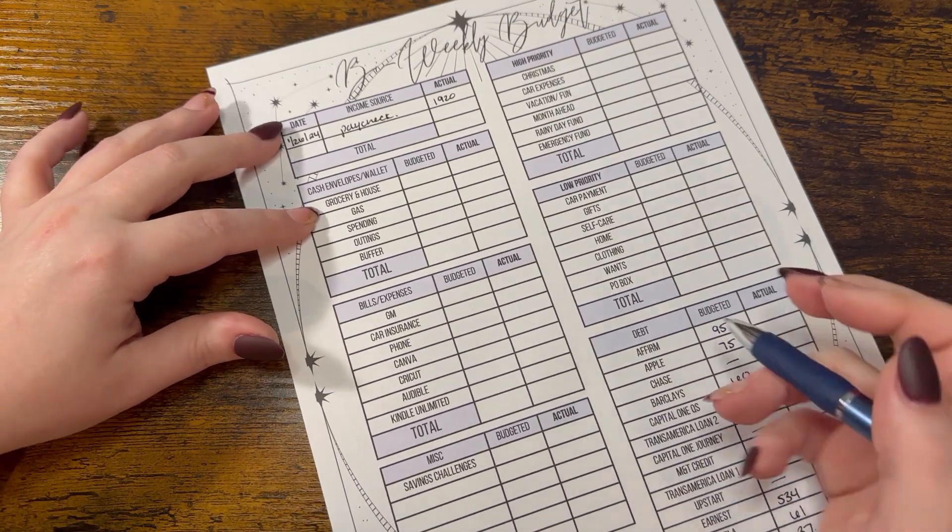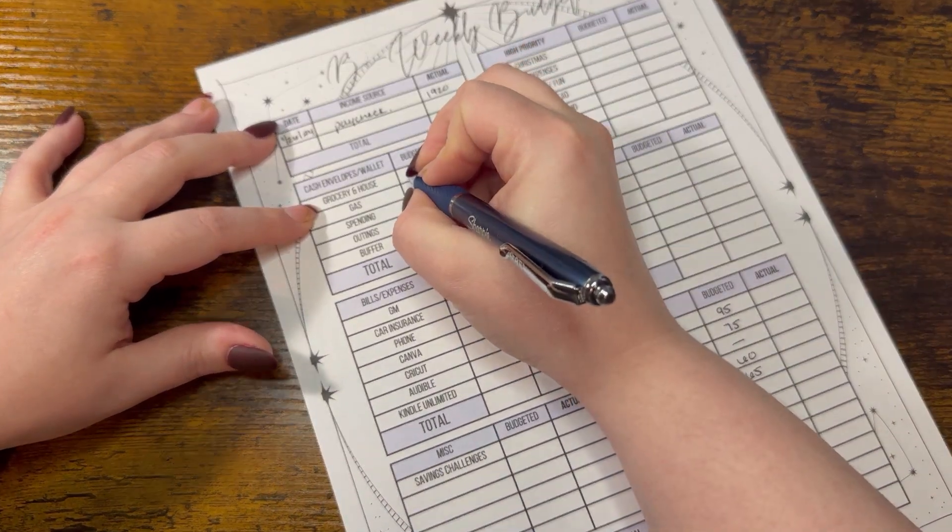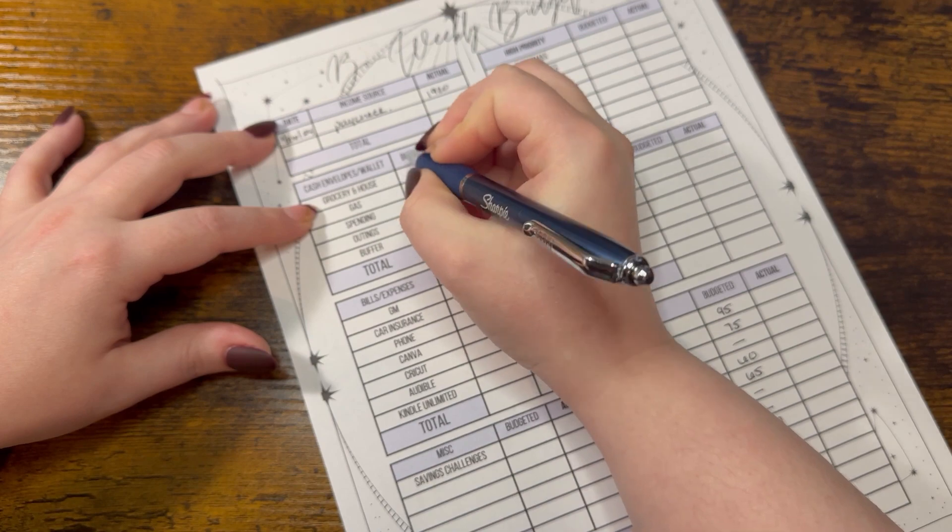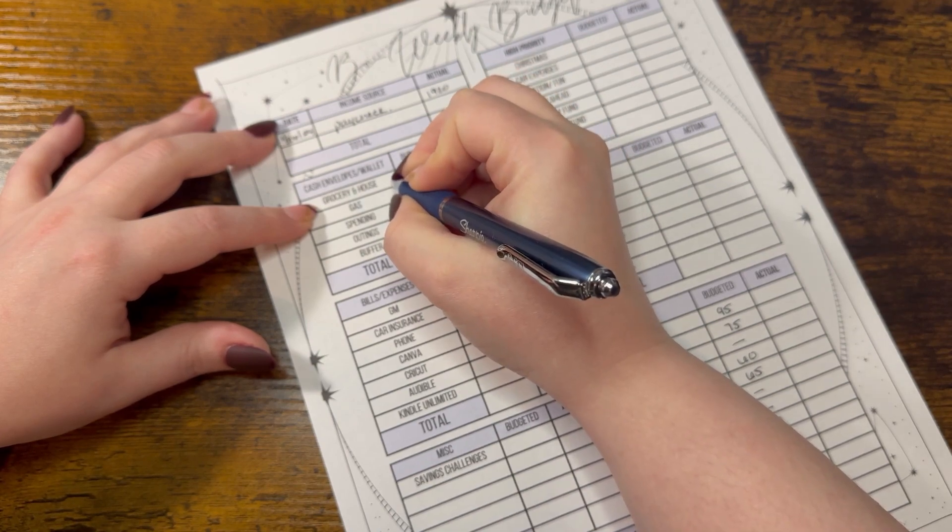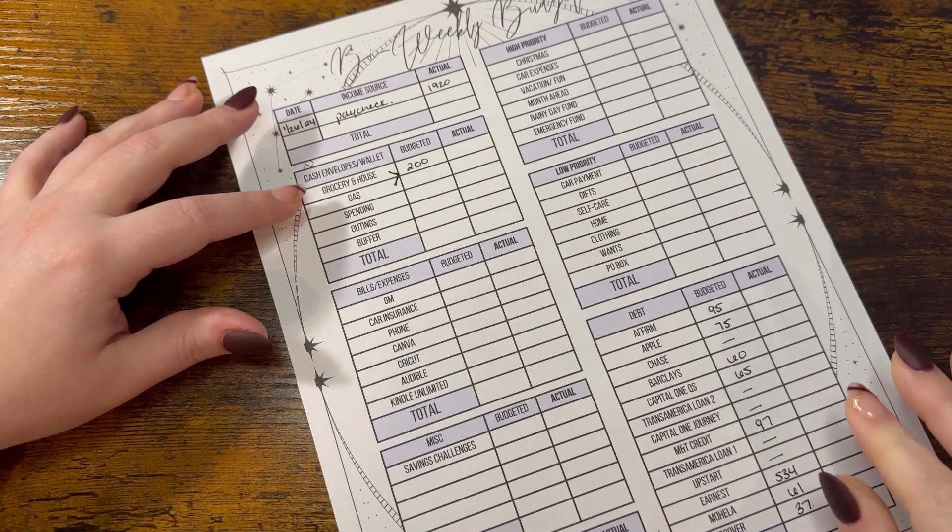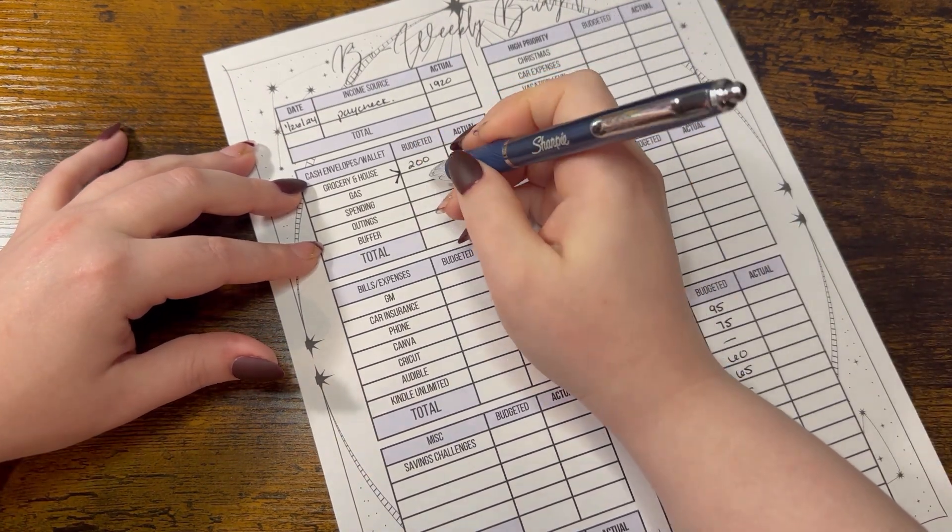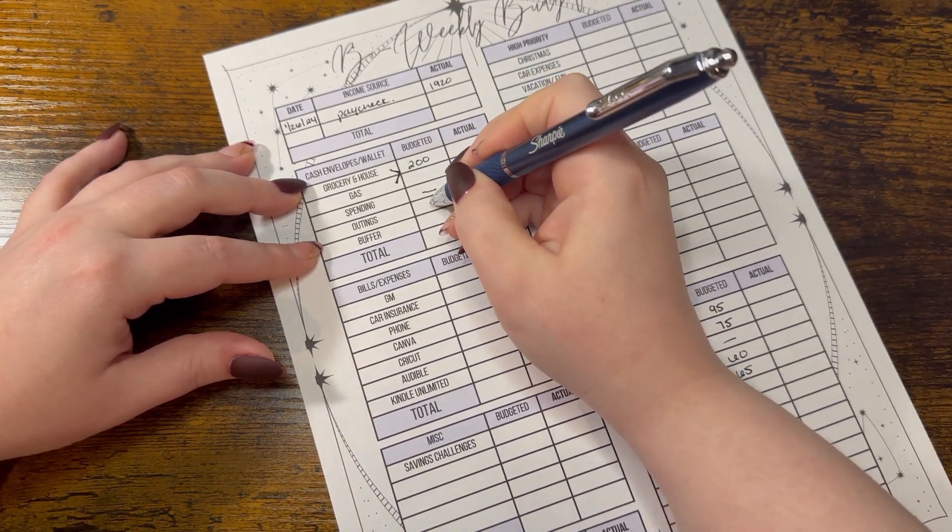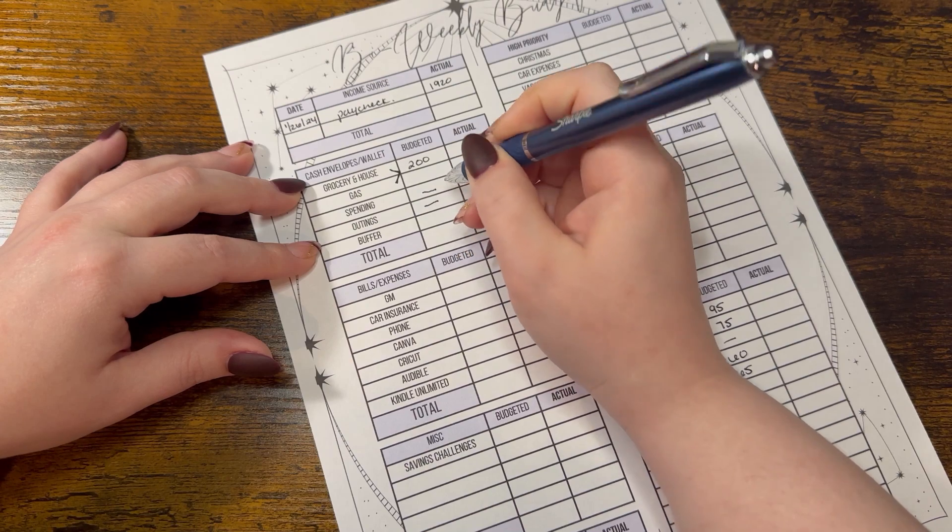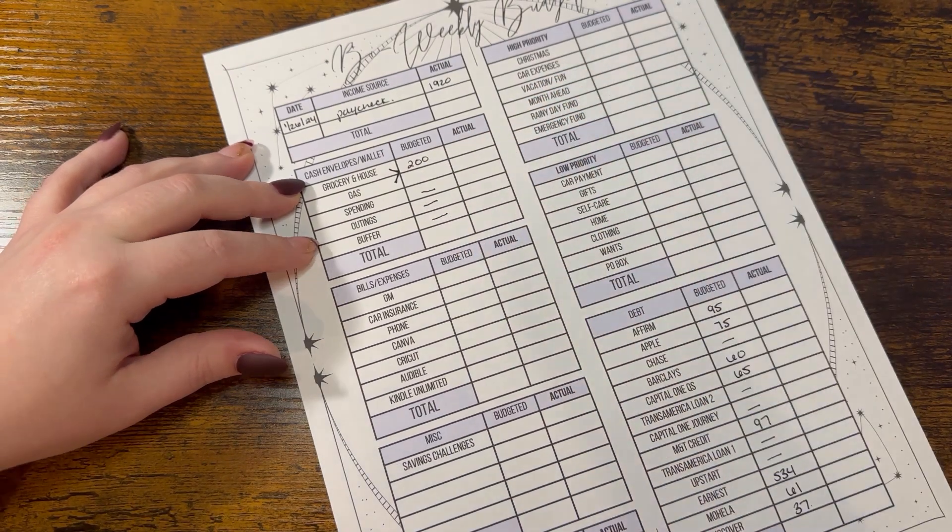Grocery and house is going to get its usual $200, and right now I am splitting that with gas as well. Spending is getting nothing, outings is getting nothing, and buffer is getting nothing right now.